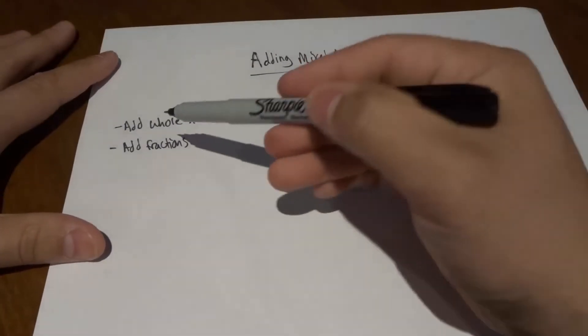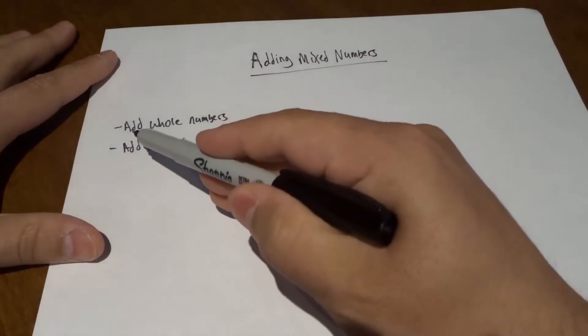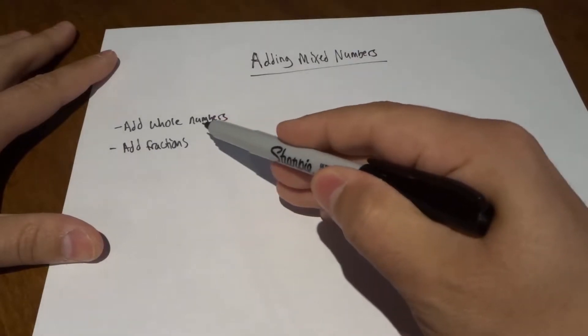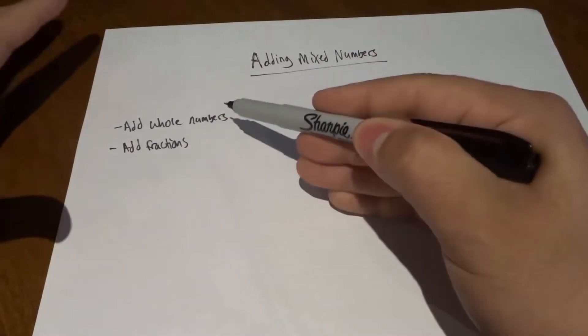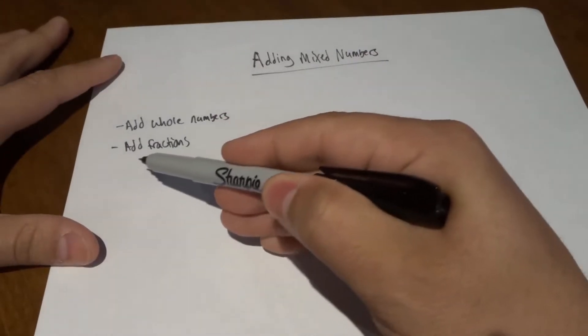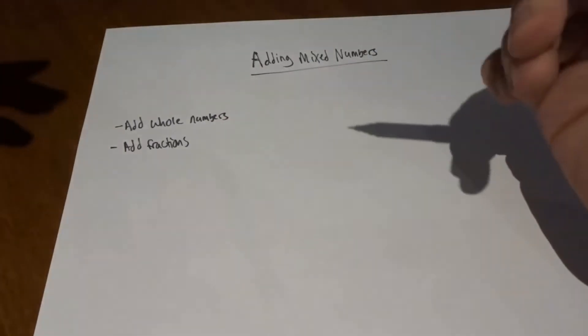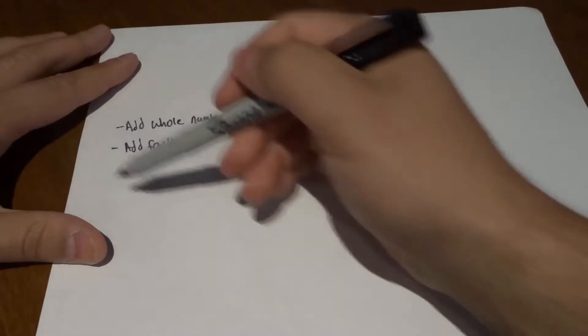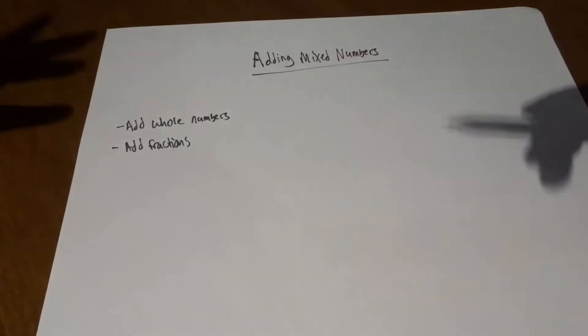Now this is the basic process. You want to add the whole numbers together and then you want to add the fractions. It's actually a very simple two-step process.